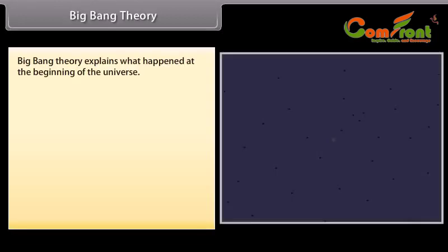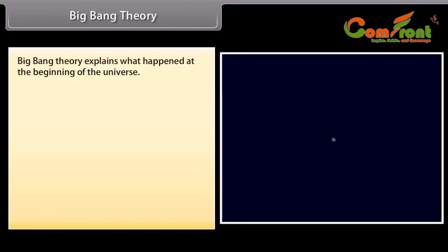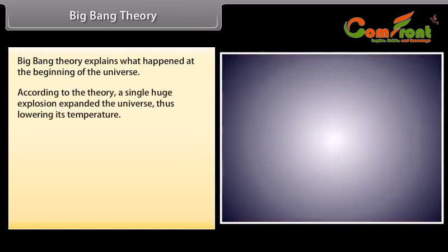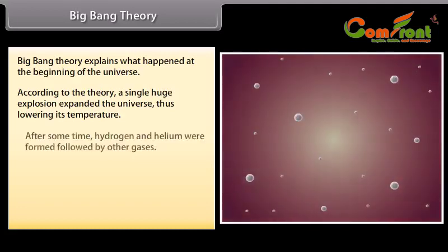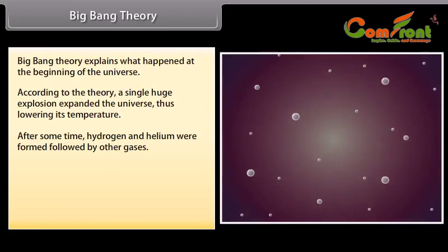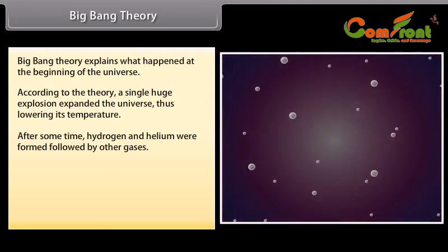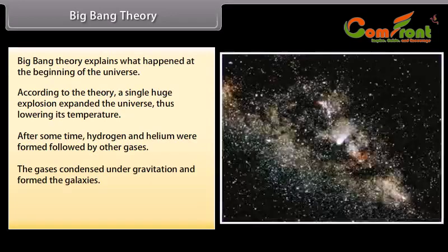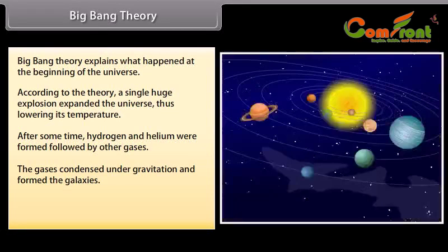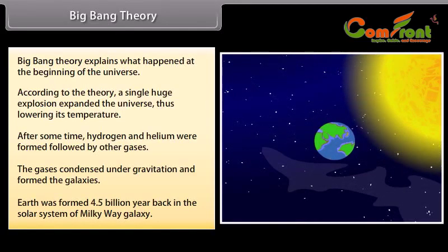Big Bang Theory explains what happened at the beginning of the universe. According to the theory, a single huge explosion expanded the universe, thus lowering its temperature. After some time, hydrogen and helium were formed, followed by other gases. The gases condensed under gravitation and formed the galaxies. Earth was formed 4.5 billion years back in the solar system of the Milky Way Galaxy.